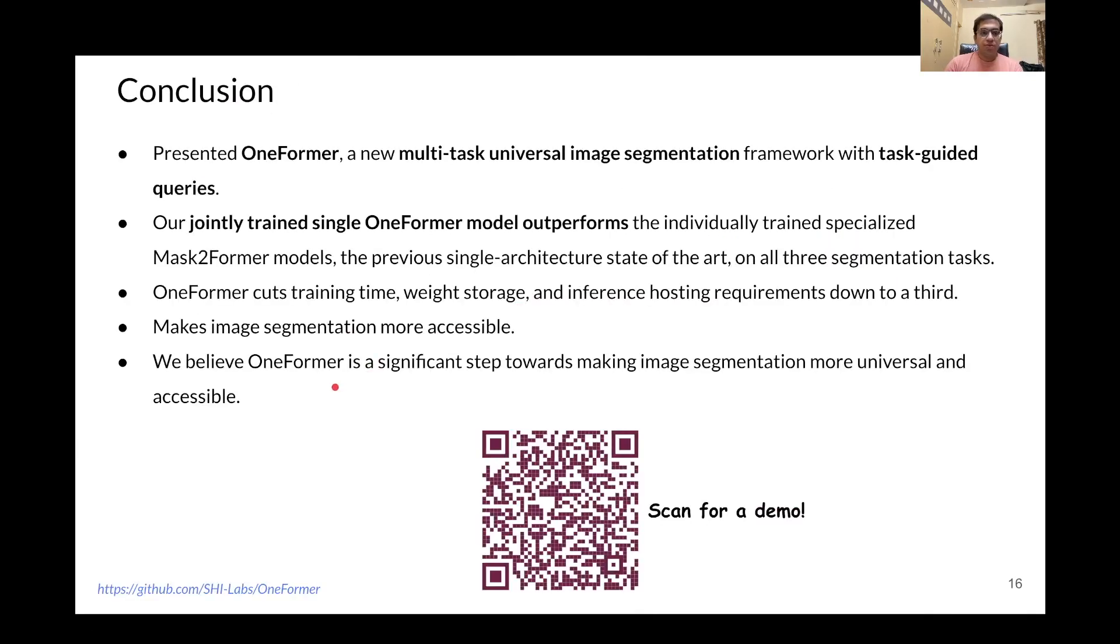So to conclude, we presented OneFormer, which is a new multi-task universal image segmentation framework with task-conditioned queries. A single jointly trained OneFormer model outperforms the individually trained specialized Mask2Former models on all three segmentation tasks. It cuts training time, storage, and inference hosting requirements down to a third, making image segmentation more universal and accessible.